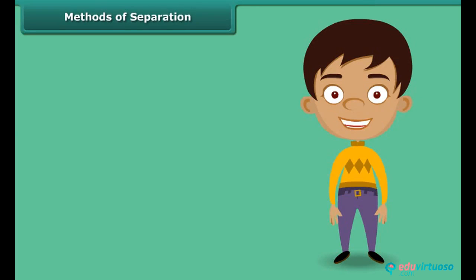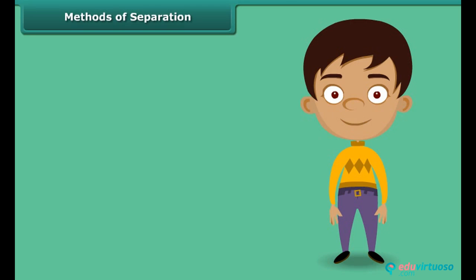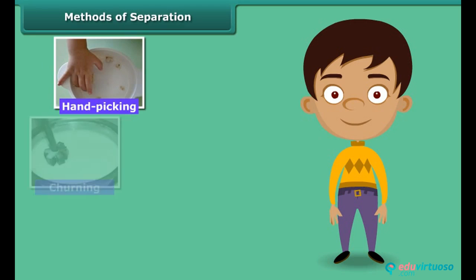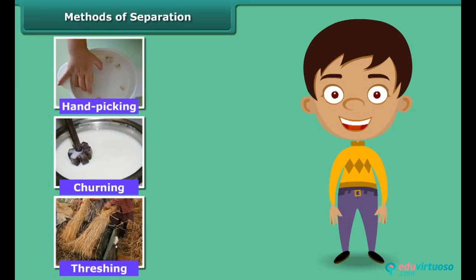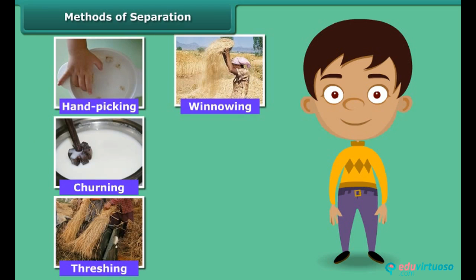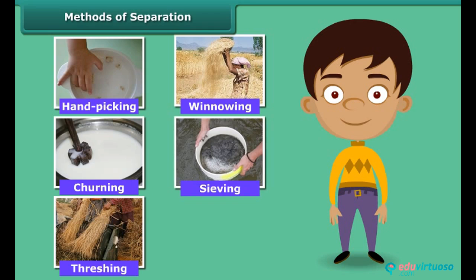You sure would have some idea about the methods of separation. In fact, you would have used some of these methods in your day-to-day life. Let us list some methods commonly used to separate the components of a mixture: hand picking, churning, threshing, winnowing, and sieving. The basis for choosing a method of separation depends upon the physical properties of components.